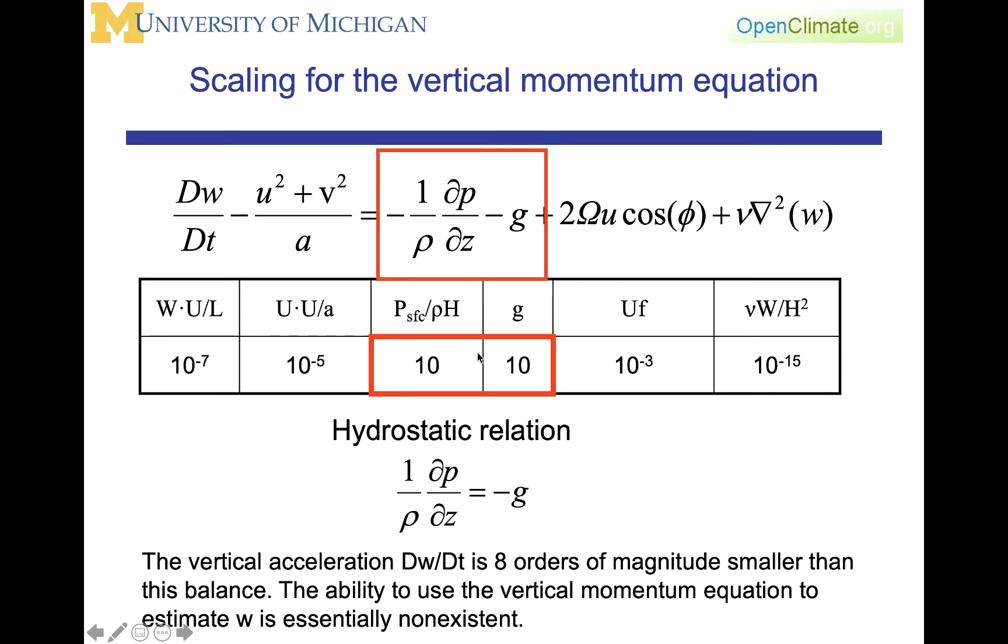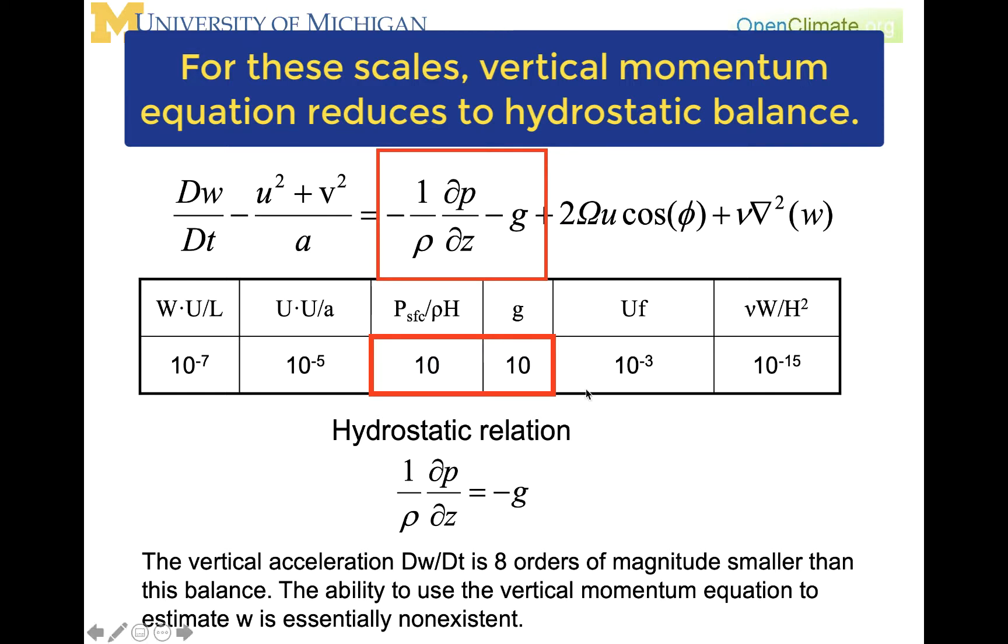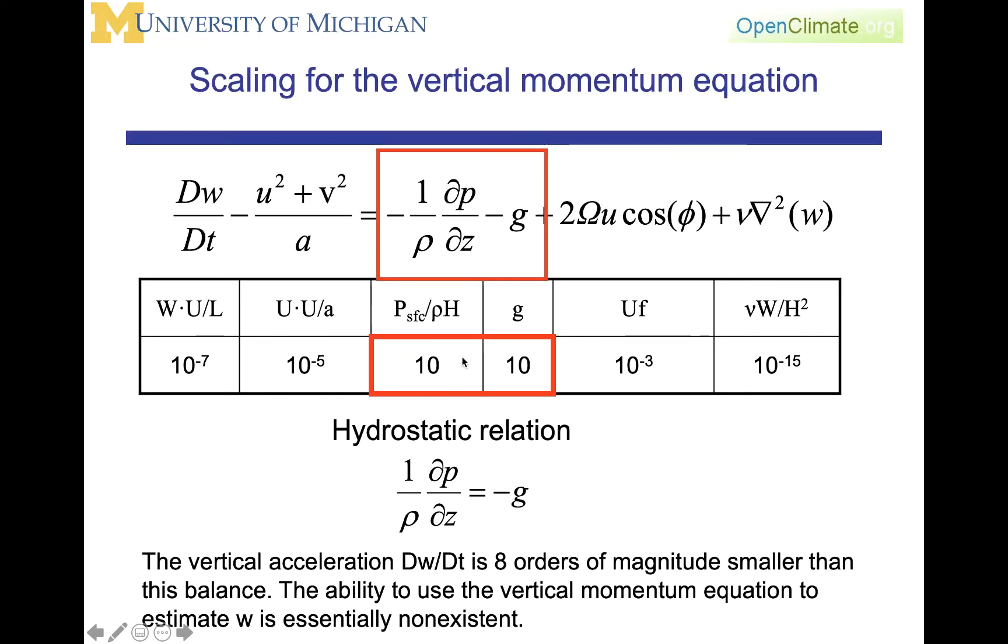Hence, in this analysis, we see a very large balance between the vertical pressure gradient and gravity, which you should recognize as the hydrostatic relationship. If you think about this for a moment, what it tells you is that the vertical momentum equation, this equation for dw/dt, in the case of the scale factors for large scale mid-latitude flow, the vertical momentum equation reduces to the hydrostatic relationship. If you compare the acceleration to these two terms, they are 8 orders of magnitude difference.